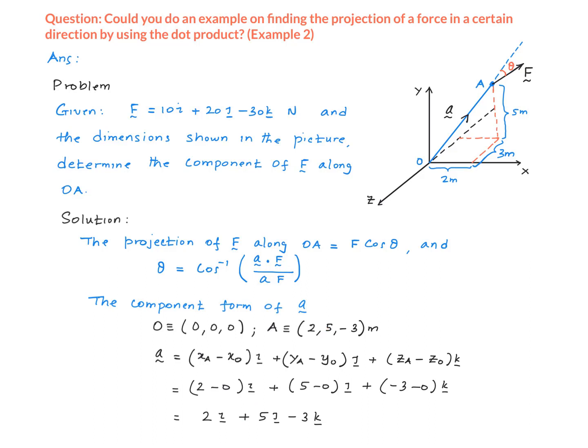We'll list the coordinates of the starting point, which in this case is point O. And we know point O coincides with the origin of the coordinate system, and therefore the coordinates are zero, zero, zero. From the picture you can see the coordinates of point A are 2, 5, and minus 3 meters. Then vector A works out to be 2i plus 5j minus 3k.